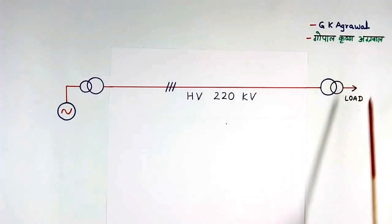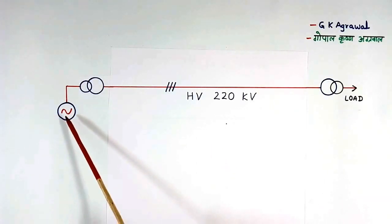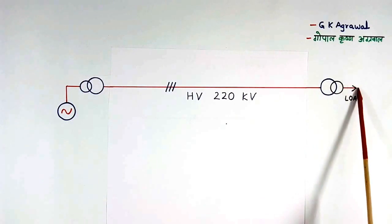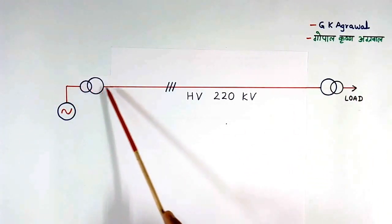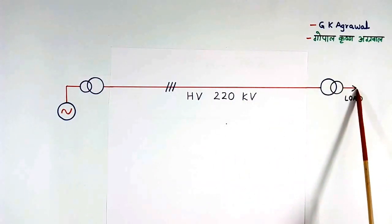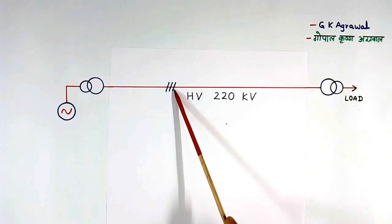Here I have shown a simple transmission system. This is shown in the form of single line diagram. Why it is called single line diagram? Because this system is 3 phase, but everywhere I have shown only single line. So it is called single line diagram. This is easy to draw. Here I have shown 3 lines. This means this is 3 phase system.